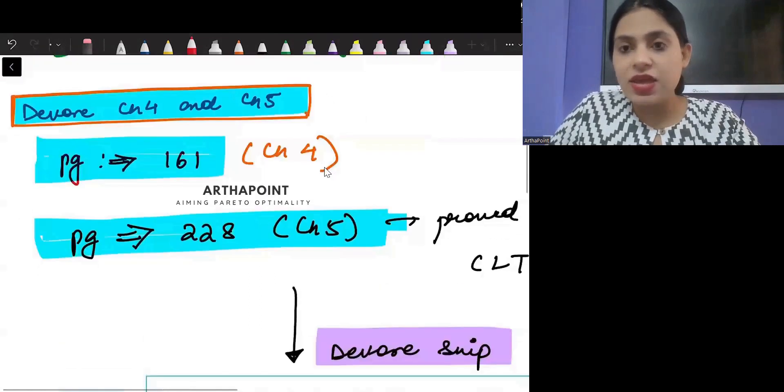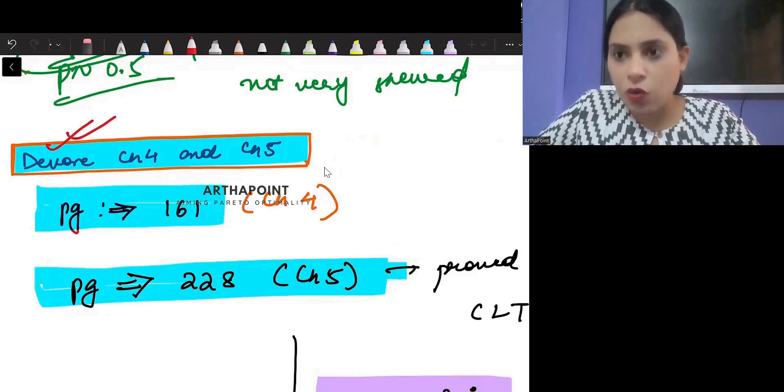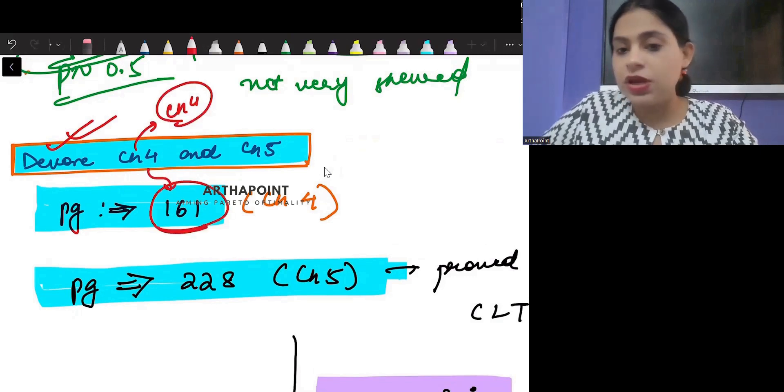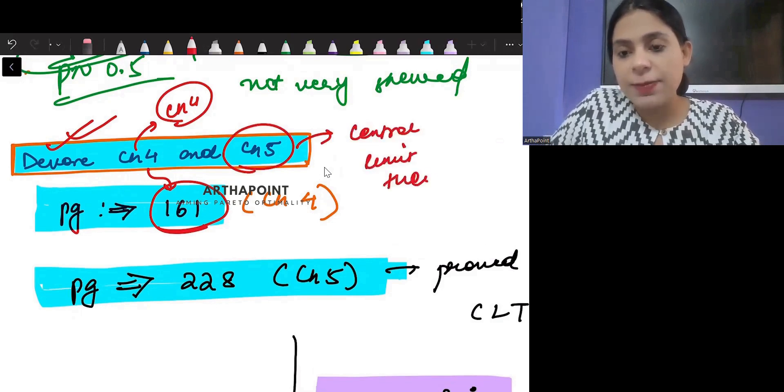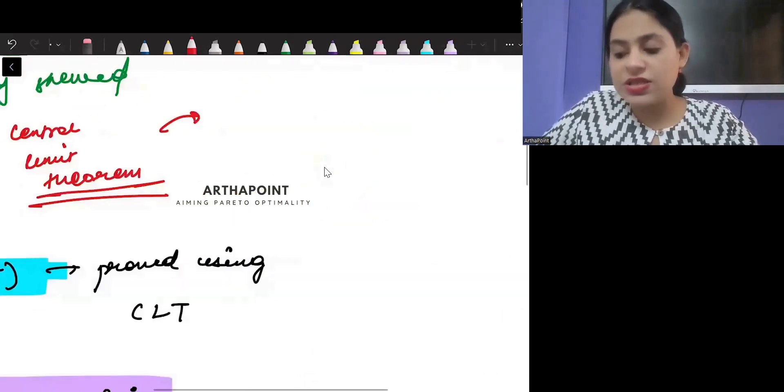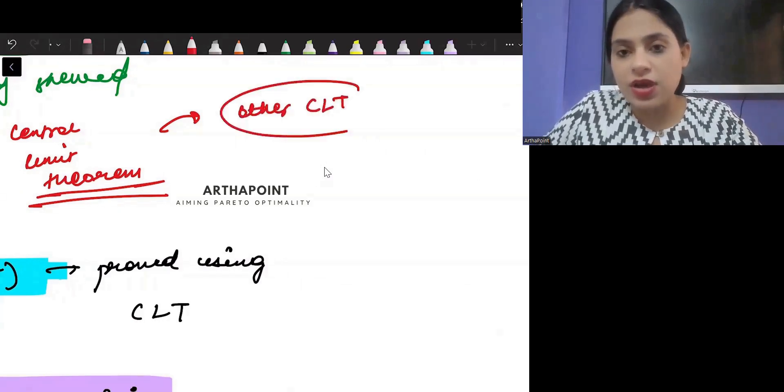Devore is the book that we have been following all through the year. If you go to Devore chapter number 4, that is page 161, or chapter number 5 where you have been explained central limit theorem, you have the complete explanation of central limit theorem.